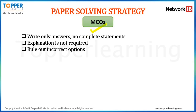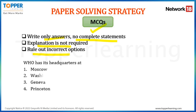We'll first begin with MCQ. It's a very crucial segment of your paper. In this MCQ type of question, you're expected to write only answers. You're not expected to write the complete statements which are given in the question paper. While writing the answers to these MCQs, explanation is not required. You're not required to justify why a particular option is correct. The strategy would be either to know the correct answer or to rule out the incorrect options. We'll pick up an example to understand.